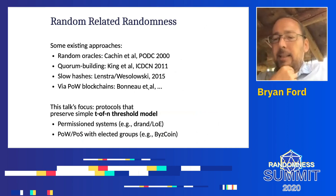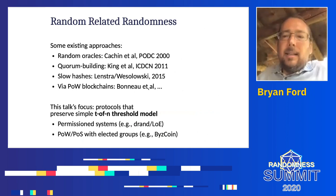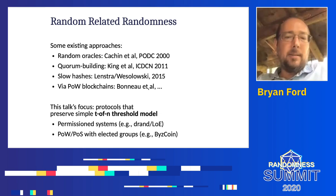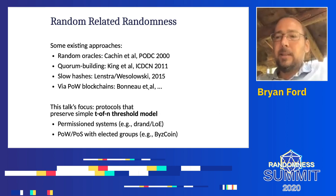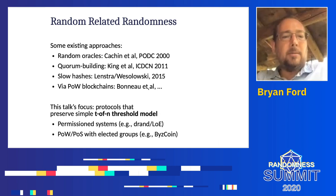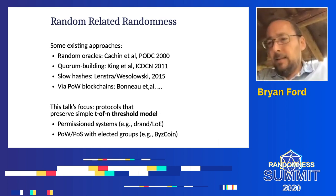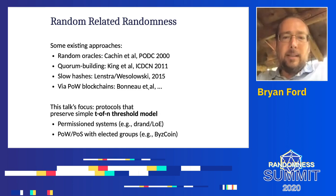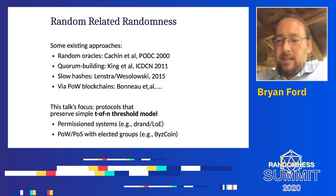Now let's take a brief look at the academic background. There are many different approaches to creating public randomness in the research literature. This talk focuses on distributed randomness protocols, and there is a lot of precedent. One much earlier paper, from about 20 years ago, is Christian Cachin's 'Random Oracles in Constantinople,' which was one of the first papers to use distributed randomness in a distributed consensus protocol.